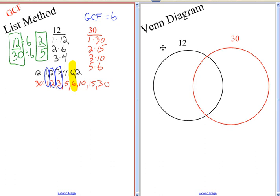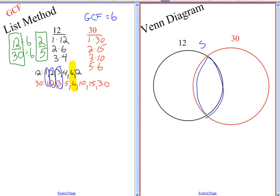And I'm going to create a Venn diagram where my black circle is for 12 factors, my red circle is for 30 factors, and the circle where the circles overlap in the middle, that blue section, is for the factors that they share.